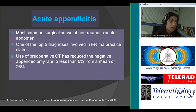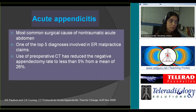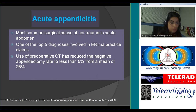Acute appendicitis is one of the top five diagnoses in emergency radiology malpractice claims, reiterating the importance of being able to recognize and correctly diagnose this condition. The use of preoperative CT has significantly reduced the negative appendix rate — it's now less than 5%, down from almost 26% earlier.